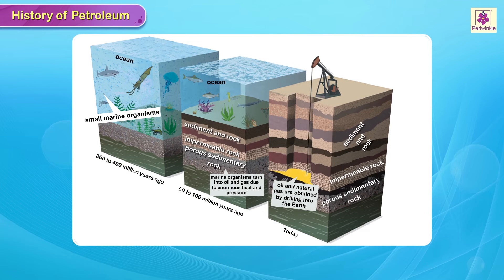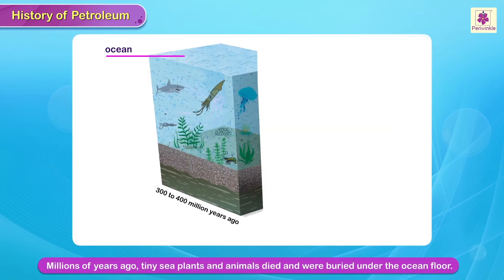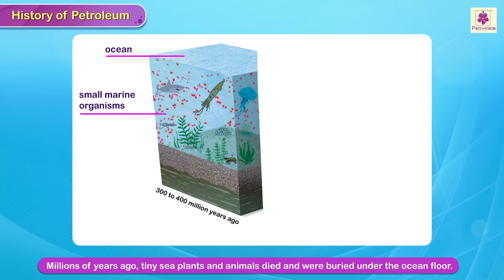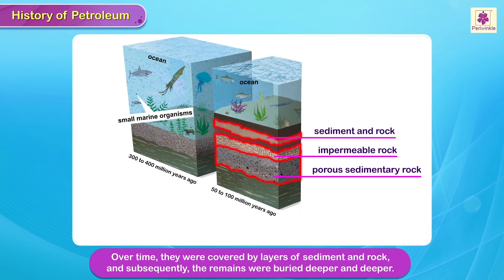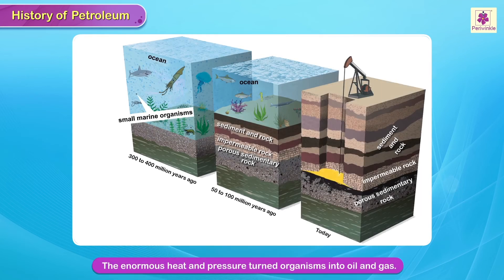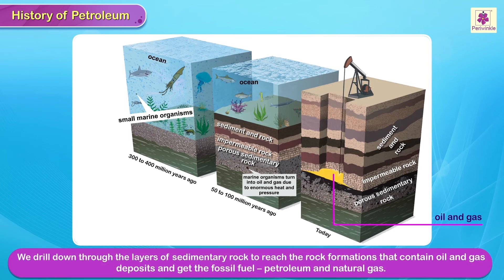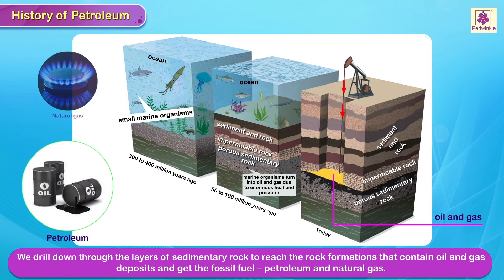Millions of years ago, tiny sea plants and animals died and were buried under the ocean floor. Over time, they were covered by layers of sediment and rock, and subsequently the remains were buried deeper and deeper. The enormous heat and pressure turned them into oil and gas. Today, we drill down through layers of sedimentary rock to reach the rock formations that contain oil and gas deposits and get the fossil fuel — petroleum and natural gas.